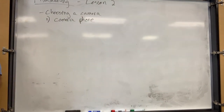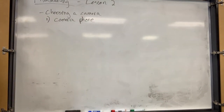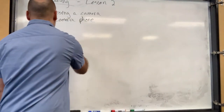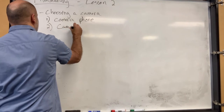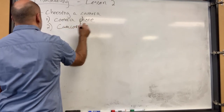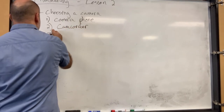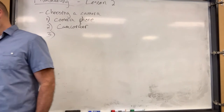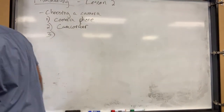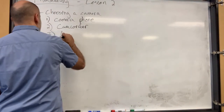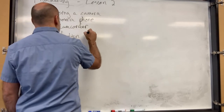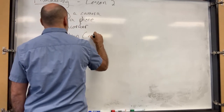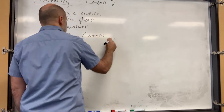So 'camera phone' is probably the easiest way to label it — smartphones usually come with a camera. And then we've got a camcorder, and then we've got an action camera, which is basically what a GoPro is.